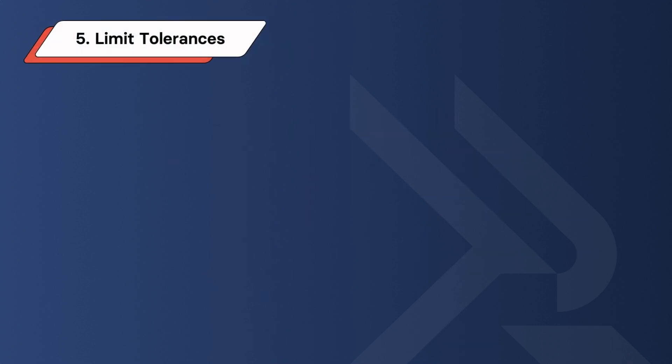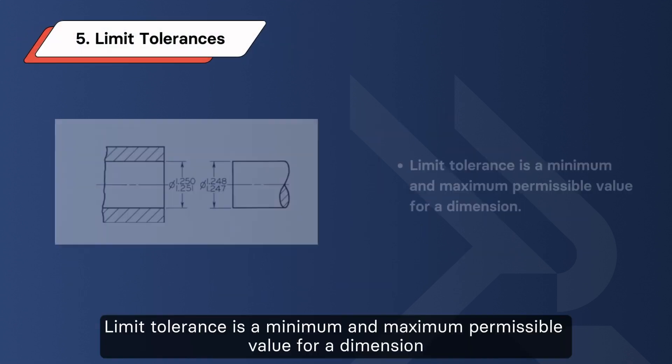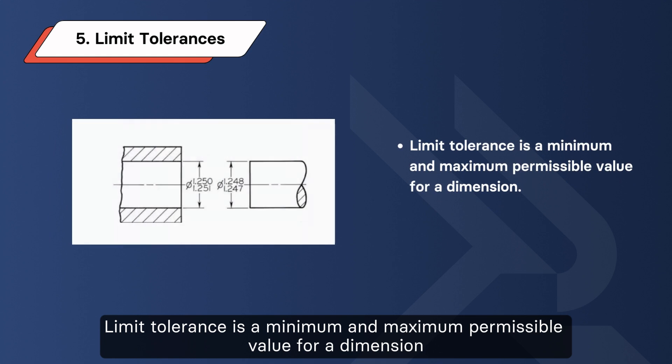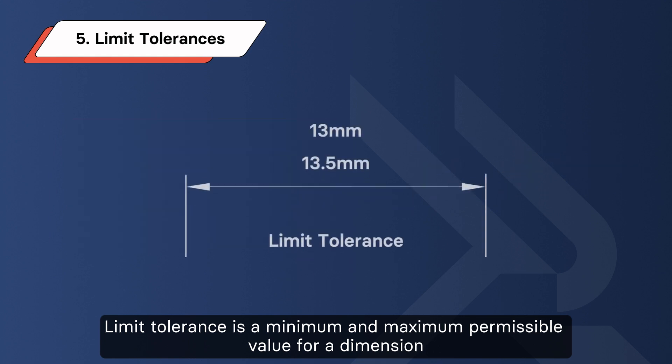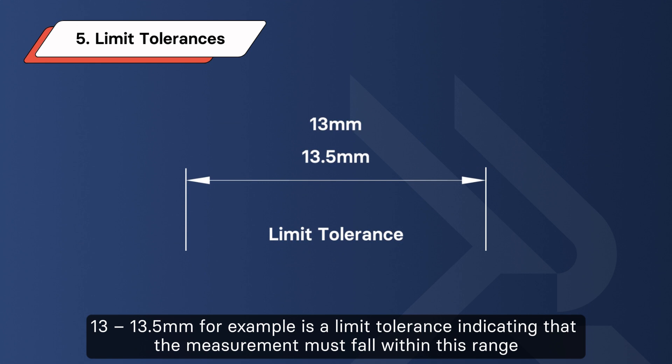Fifth: Limiting tolerance. Limiting tolerance defines a minimum and maximum permissible value for a dimension. For example, 13 to 13.5 mm is a limiting tolerance, indicating that the measurement must fall within this range.